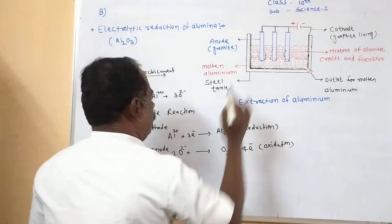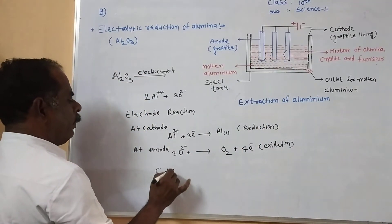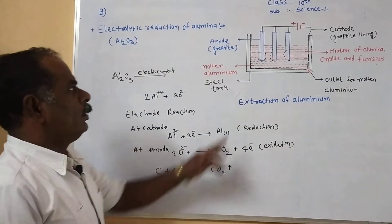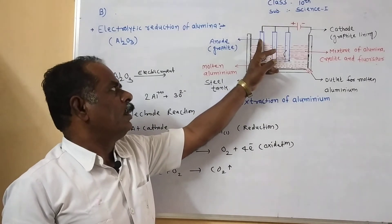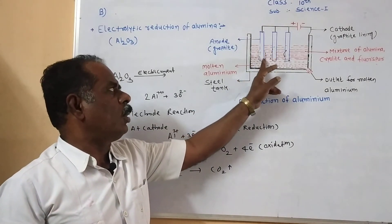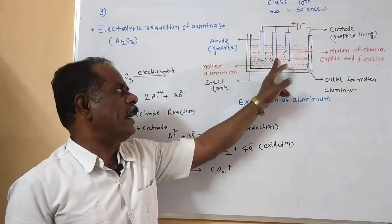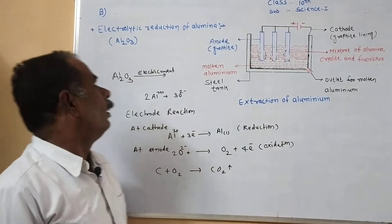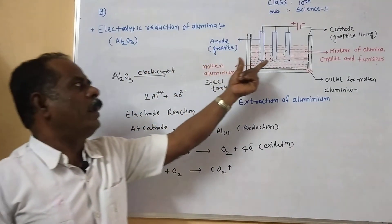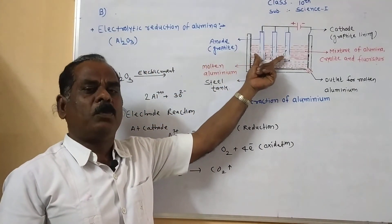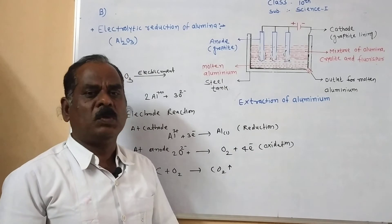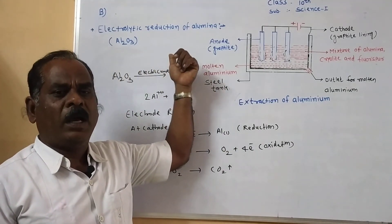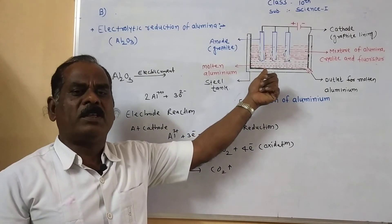The oxygen liberates carbon dioxide gas at the anode, and therefore the size of the graphite rod slowly decreases because the oxygen reacts with the graphite rod. Therefore, in the electrolytic reduction method, the graphite rod is replaced from time to time. A question may be asked: in the electrolytic reduction of alumina, why is the graphite rod replaced from time to time?